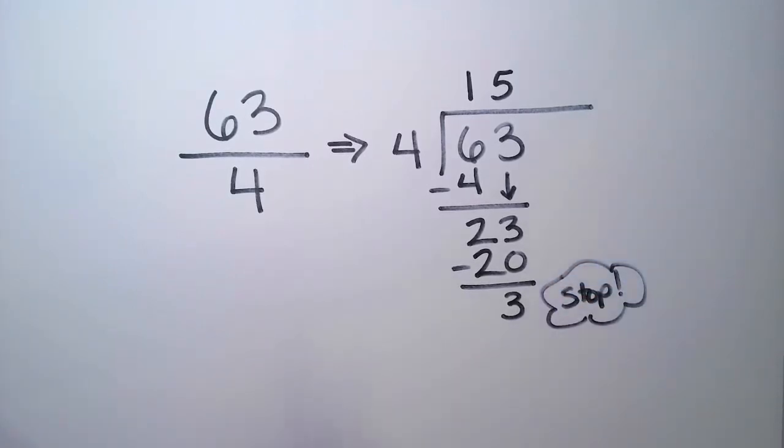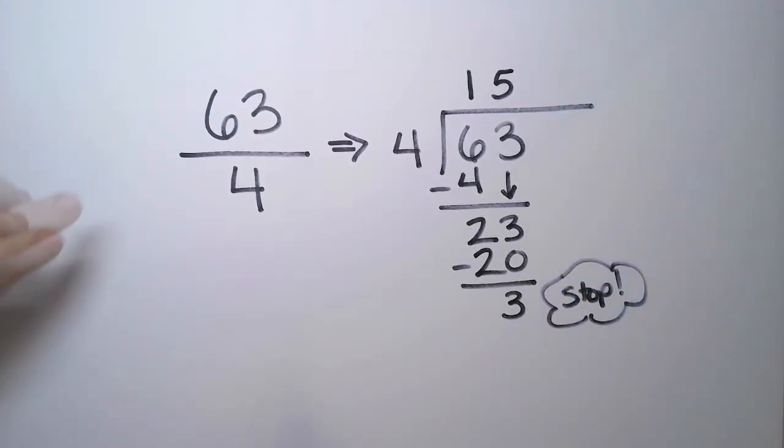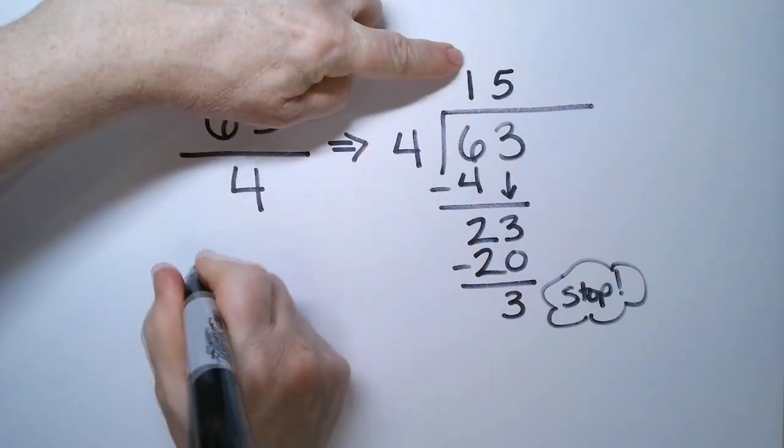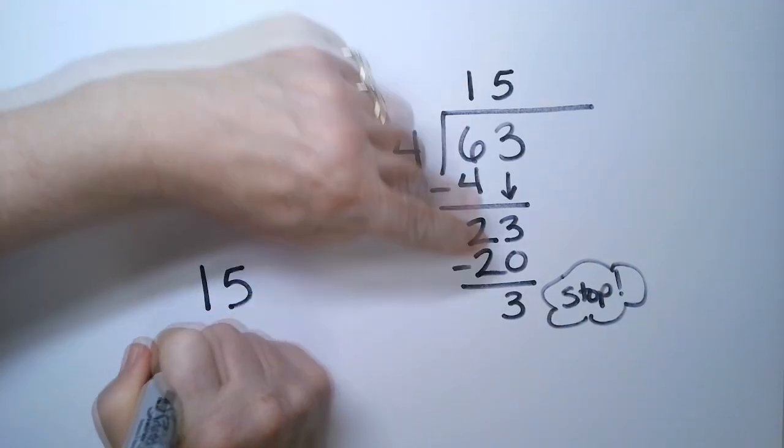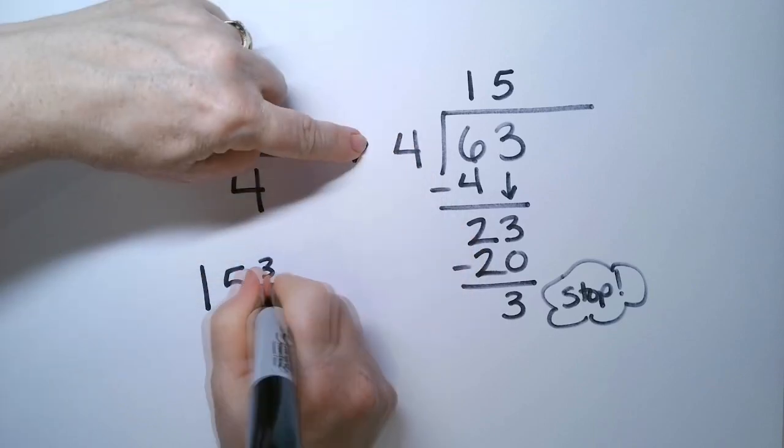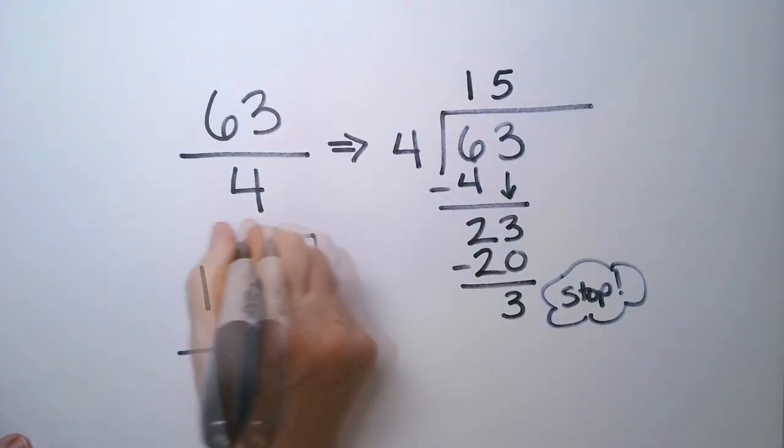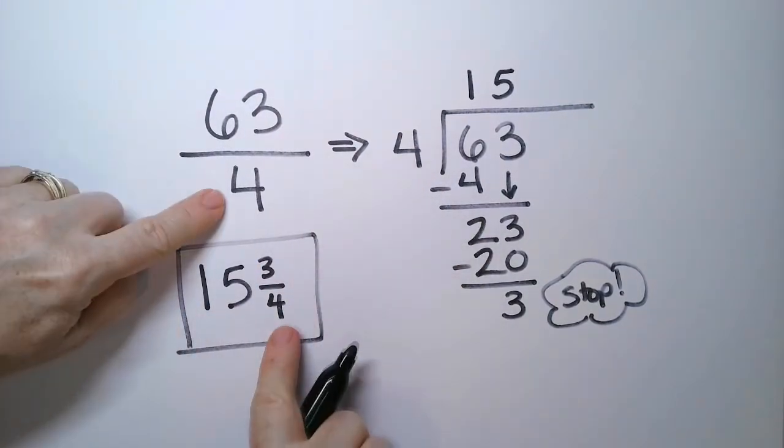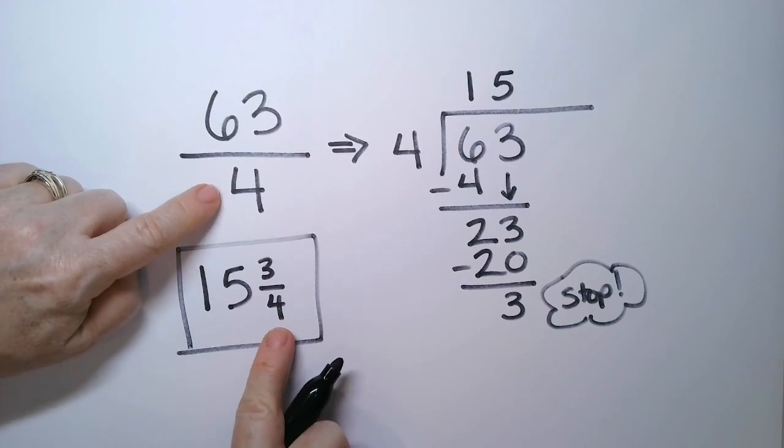Because we're going to write the remainder as a fraction. So 63 fourths is the same as saying 15 and 3 fourths. Again, notice the denominators are the same. We don't change those.